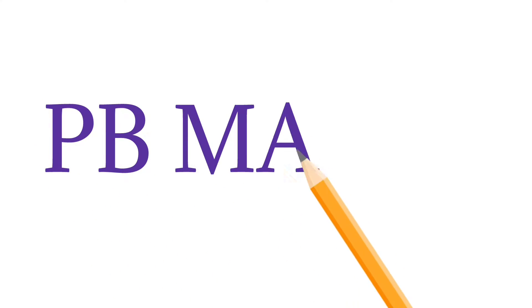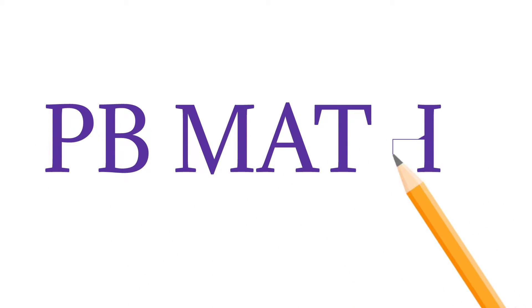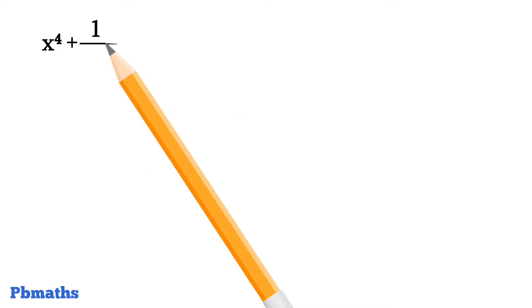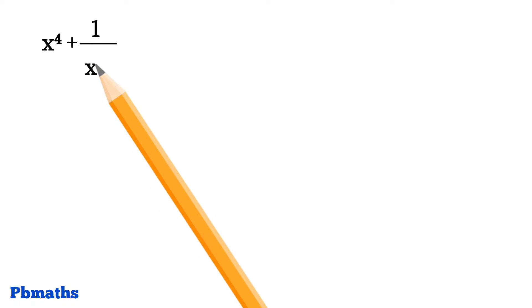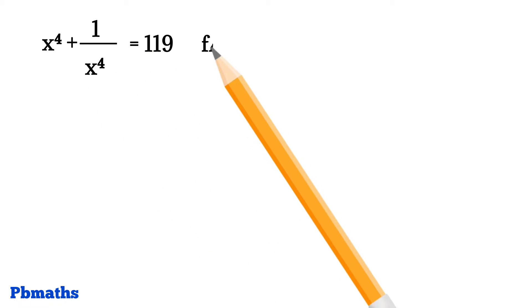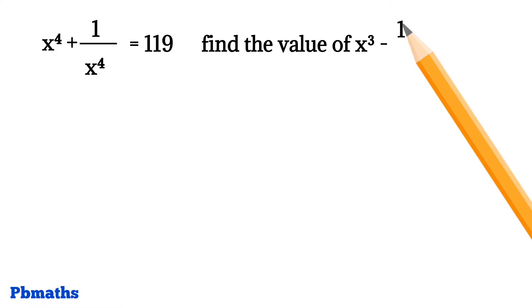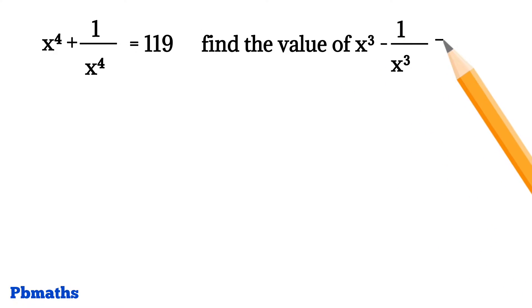Hello everyone, welcome to PB Maths. It is given that x to the power 4 plus 1 by x to the power 4 is equals to 119. Then we need to find out the value of x cube minus 1 by x cube. If you are interested to solve this problem, you can pause this video now and try to solve. Let's try to solve this problem now.